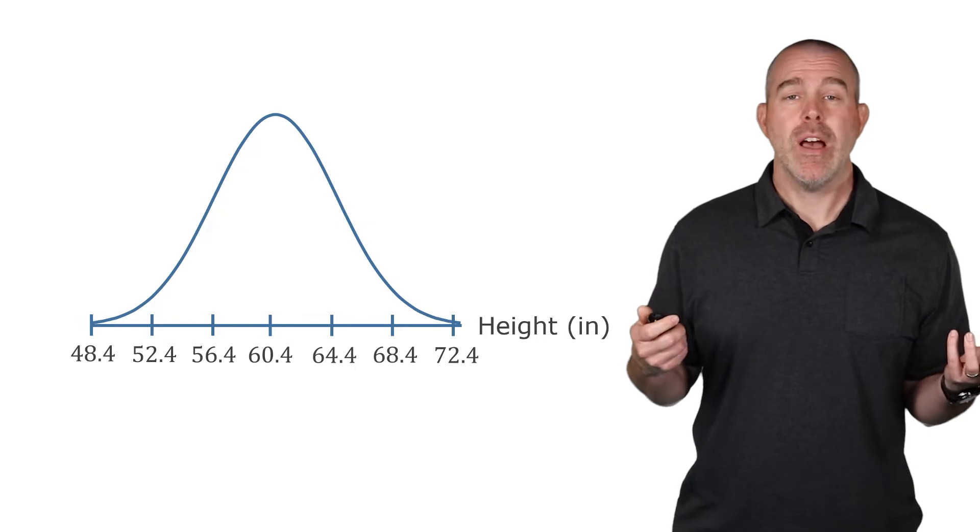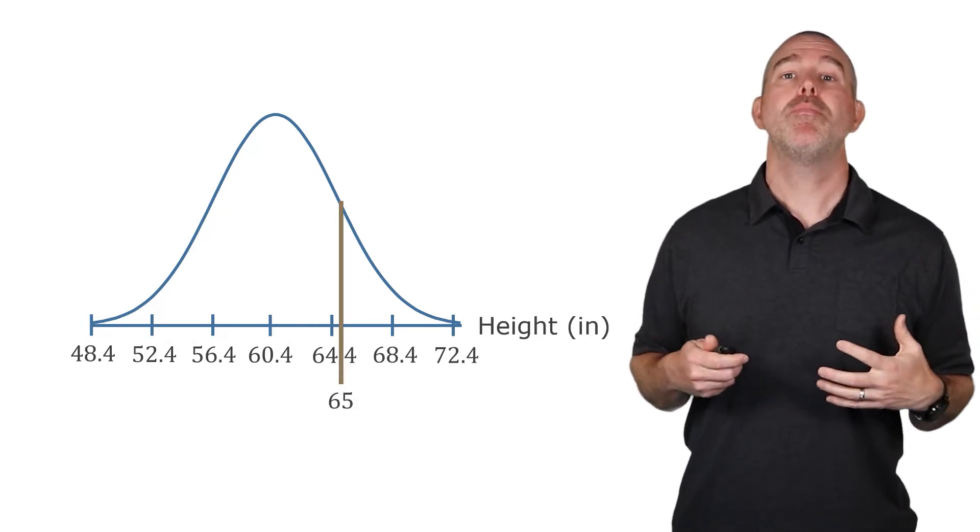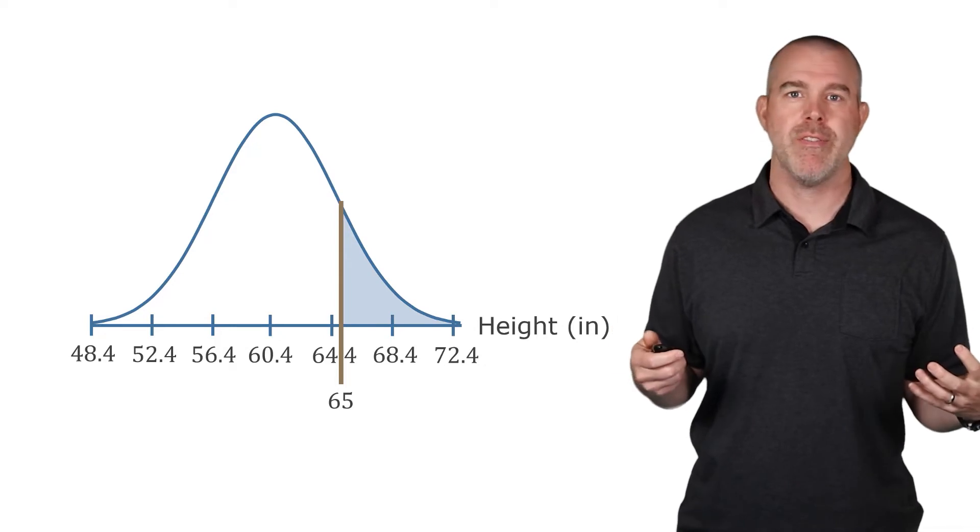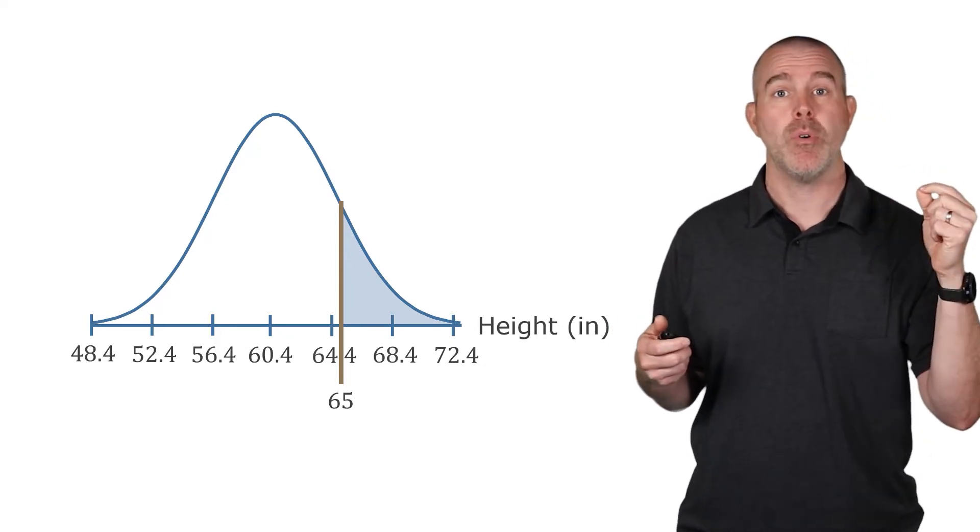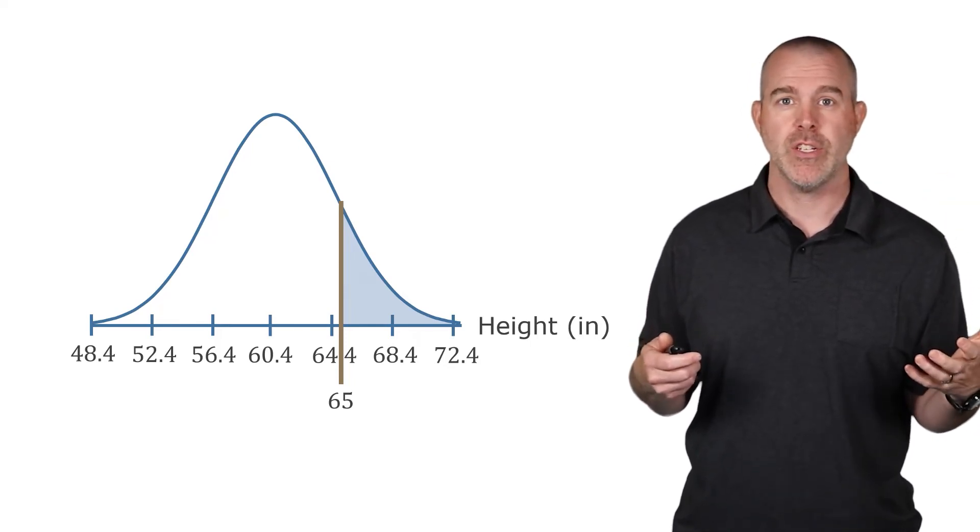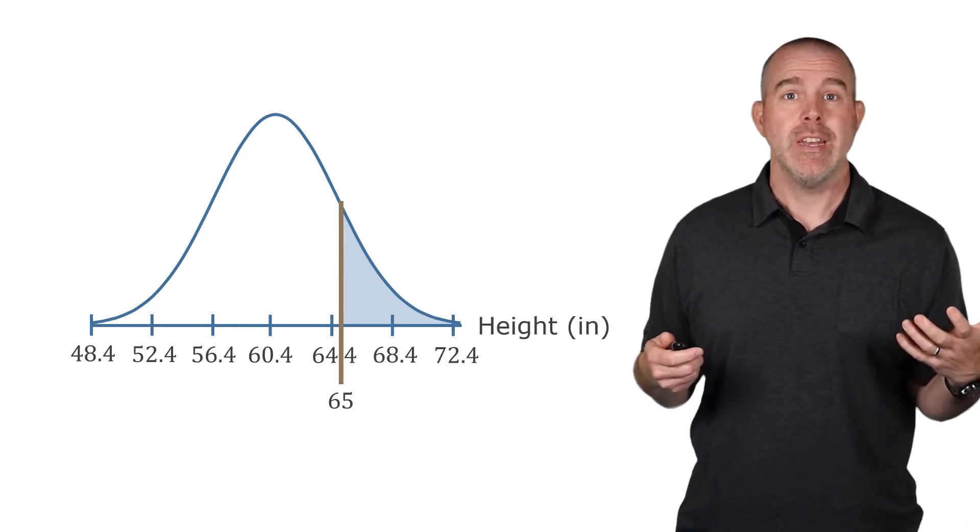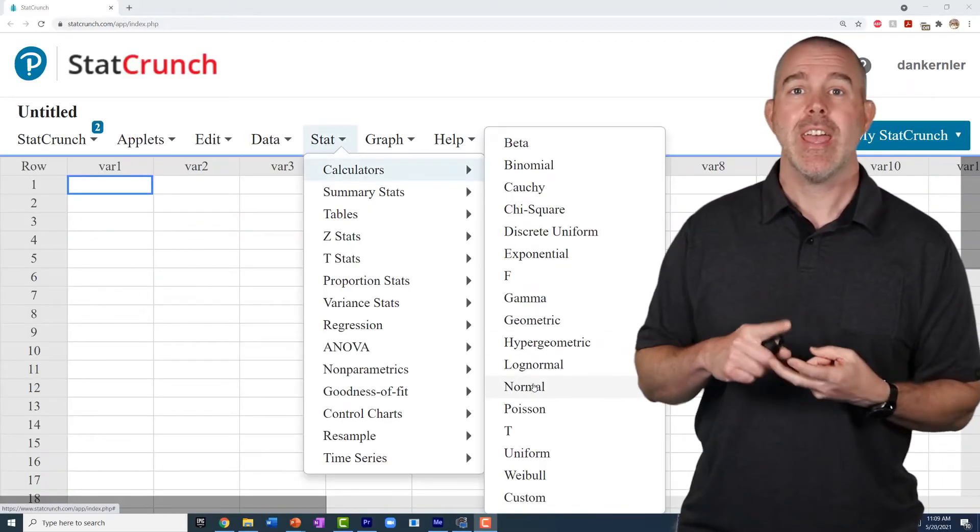We might then want to ask some questions. For example, say we look at 65 inches. We want to know what proportion of boys are taller than 65 inches. Or we could also ask the question, if I randomly select a 12-year-old boy, what is the probability that he will be taller than 65 inches? We can do this in StatCrunch. So all we do is we go to the Stat, Calculators, Normal again.